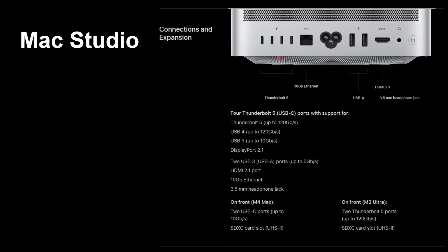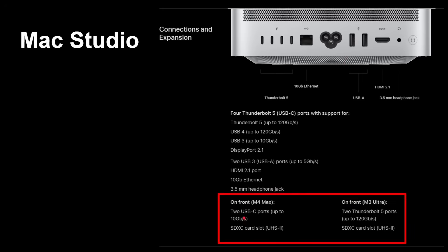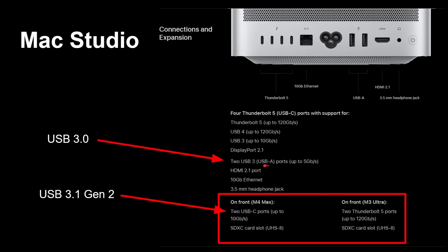At the back of the Mac Studio you have four Thunderbolt 5 ports, each with a dedicated controller inside the silicon, plus USB-A ports. On the front, the ports differ by chip: with the M4 Max you get two USB-C ports at up to 10 gigabits per second, while with the M3 Ultra you get two Thunderbolt 5 ports — giving a total of six Thunderbolt 5 ports each with its own dedicated controller. The two USB 3 ports at 5 gigabits per second are USB 3.0, and the two at 10 gigabits per second are USB 3.1 Gen 2. When talking about USB 3, it's best to just reference the gigabit number — 5, 10, or 20 — to understand what you've got.